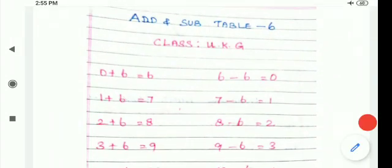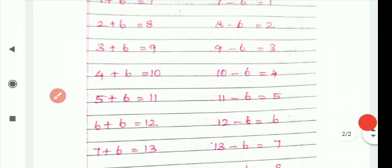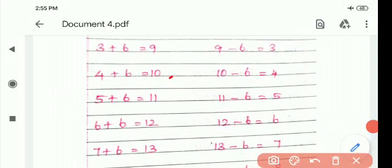Let's learn 0 plus 6 is equal to 6. 1 plus 6 is 7. 2 plus 6 is 8. 3 plus 6 is 9. 4 plus 6 is 10.